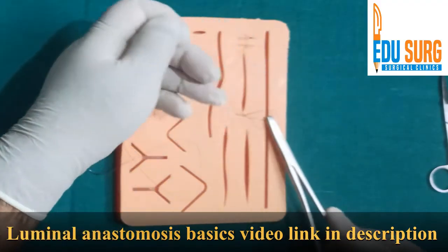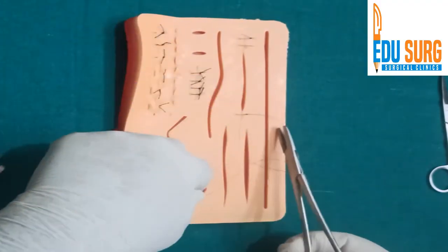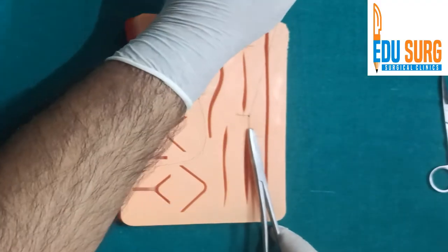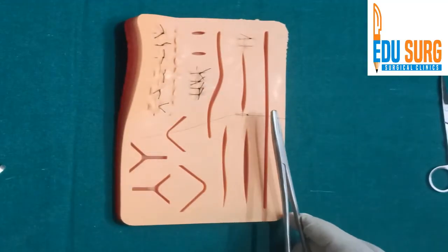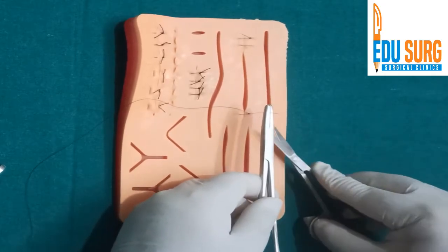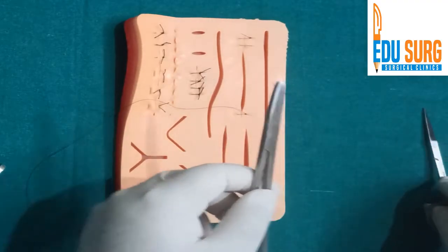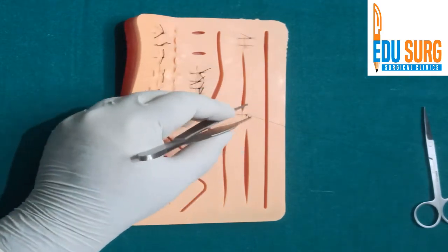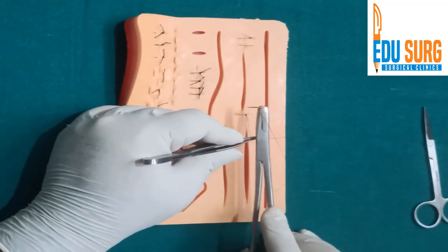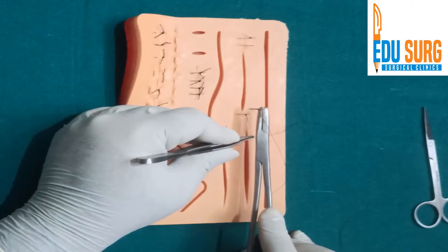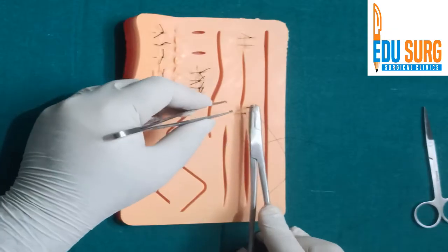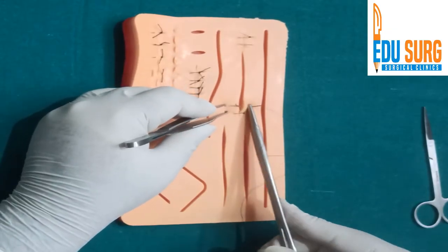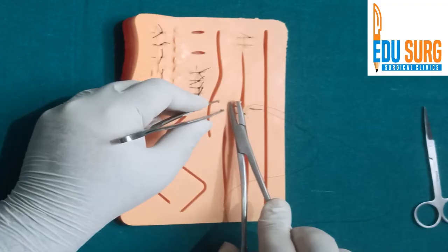So once you have taken this last posterior stitch on the intestine, if this is your last posterior stitch, don't cut the tail. Because usual Connell in intestine is anterior and it is continuous. So what we do now is, now you are outside. So we directly start the anterior layer of the intestinal anastomosis from here. So outside in.